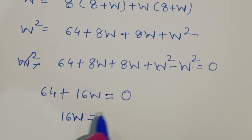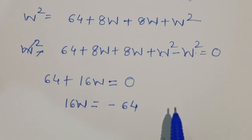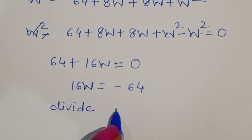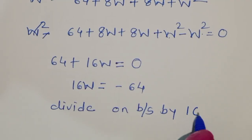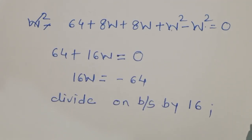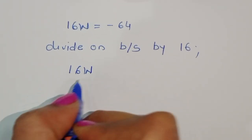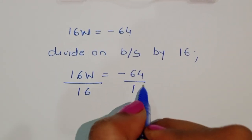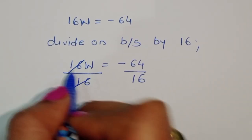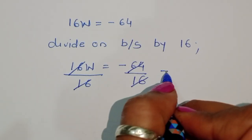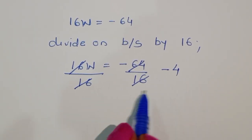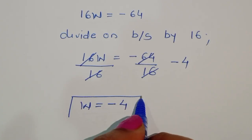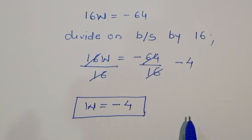So 16w = -64. Now we divide both sides by 16. 16 cancels from the left side, and -64 divided by 16 gives -4. So we get w = -4.